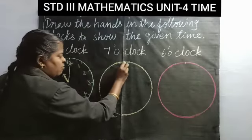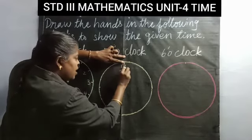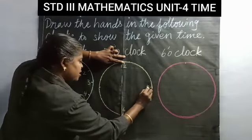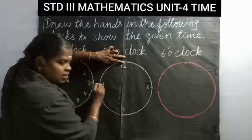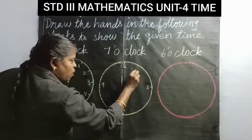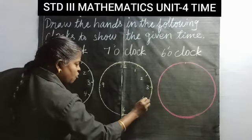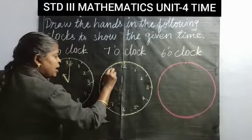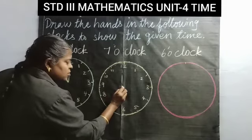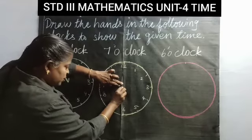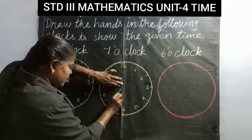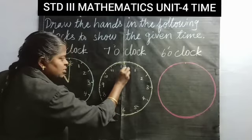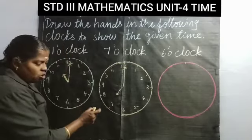Next, 7 o'clock. First, draw 12 opposite 6, and 3 and 9. Then in the middle write 1, 2, 4, 5, 7, 8, 10, and 11. After that, from the center point draw the shorter hand near 7. Then the longer hand touching 12. So now we draw 7 o'clock.